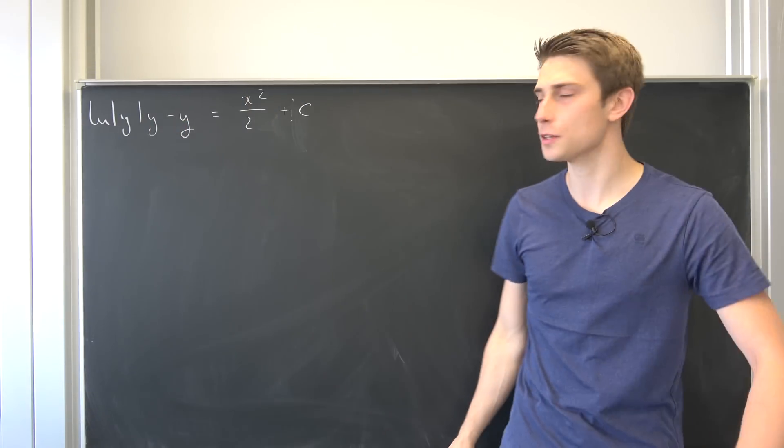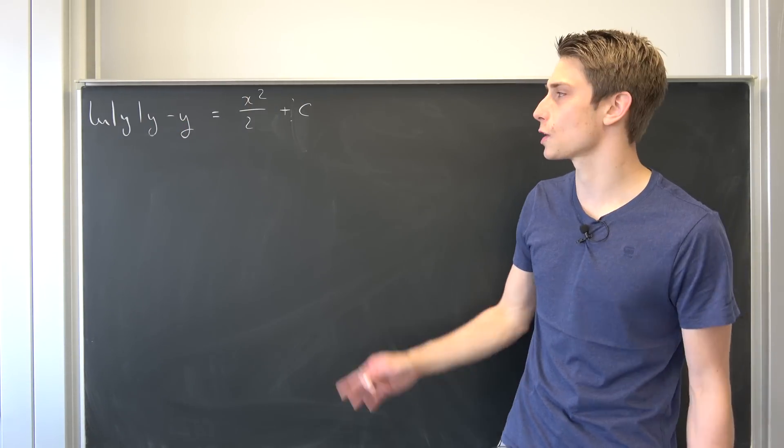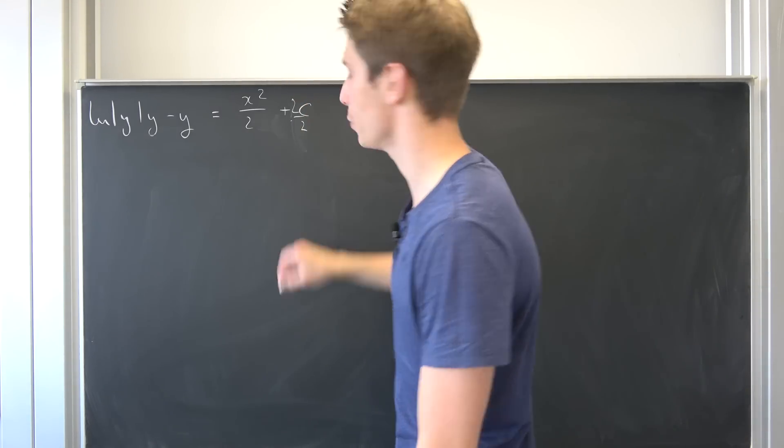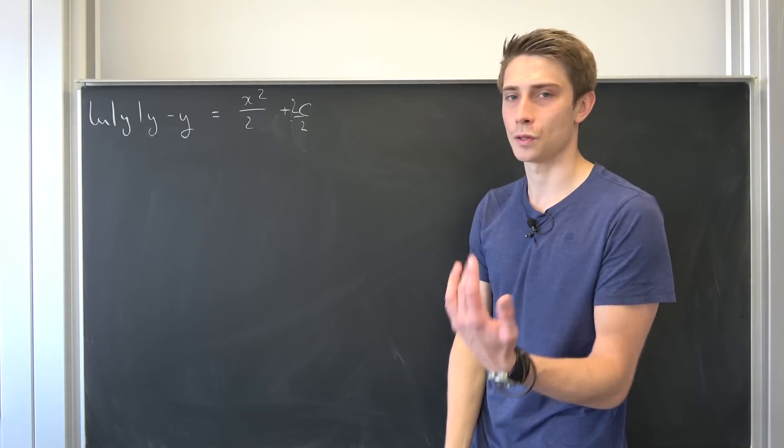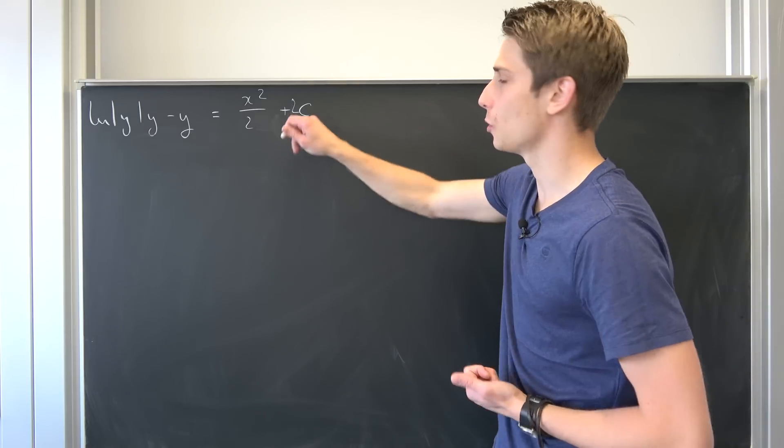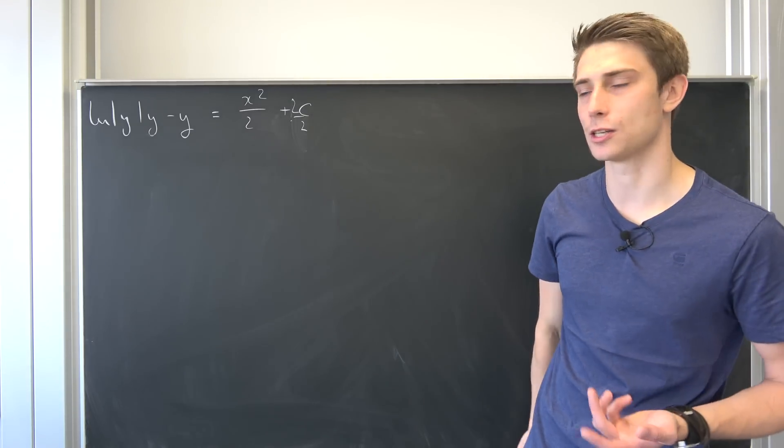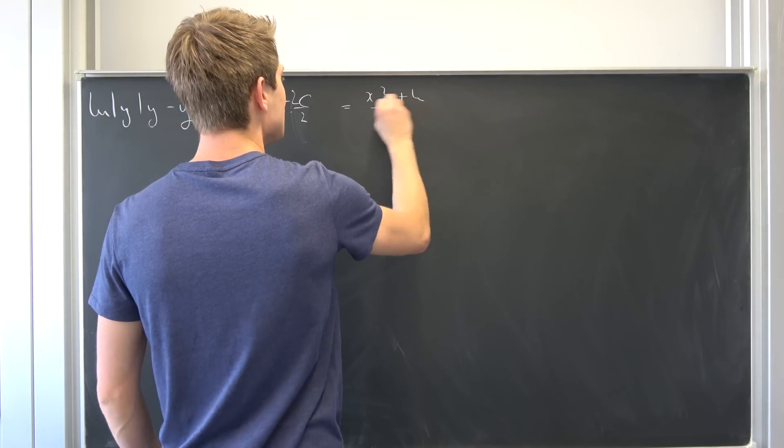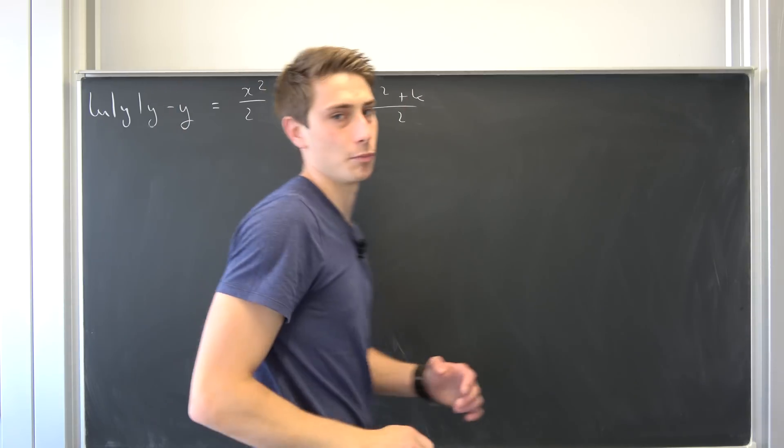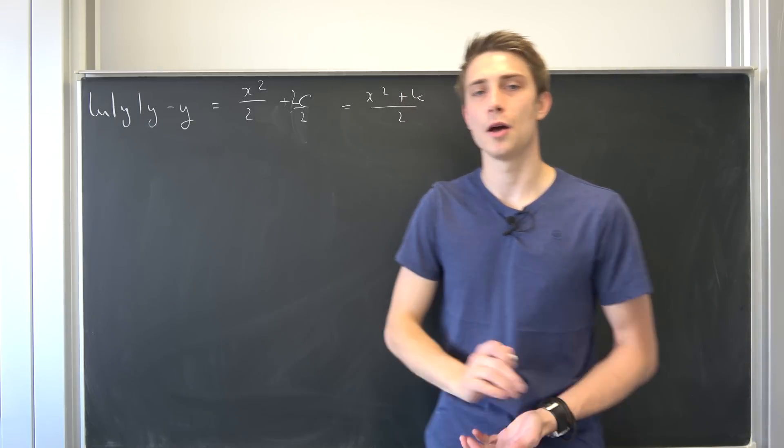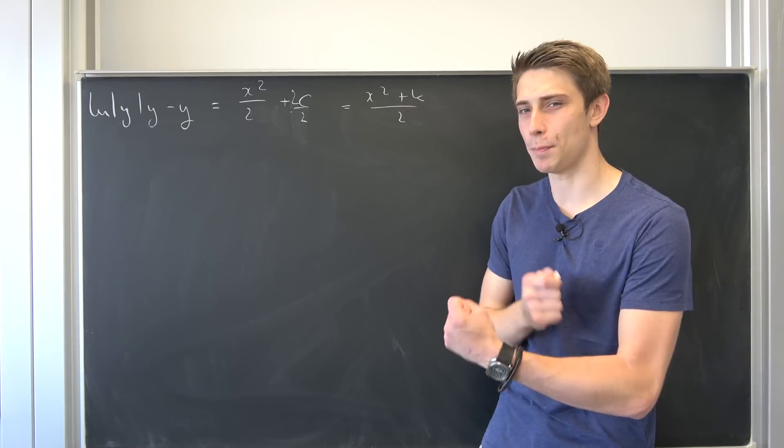So for the next part I would at first like to make this into one fraction. So advancing this c by 2 over 2. I just want to make it look more aesthetic. And you know 2 times c is just another constant. Let's call it k for example. So we end up with x squared plus k over 2. And now we have this problematic boy right here. This little bad boy.